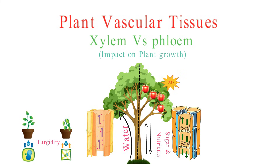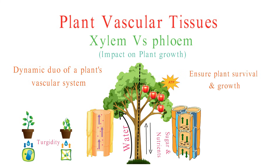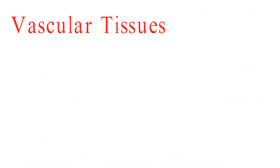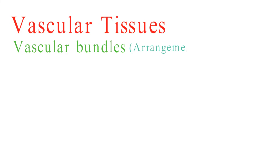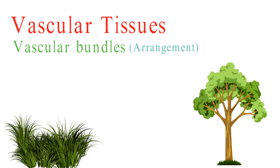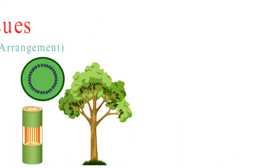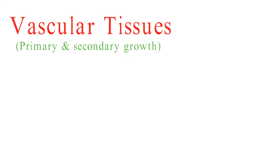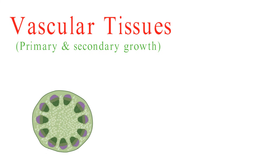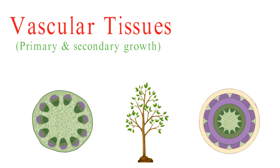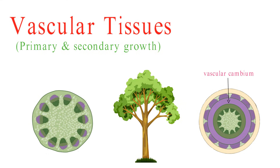In conclusion, phloem and xylem are like the dynamic duo of a plant's vascular system, working together to ensure its survival and growth. While xylem focuses on water and mineral transport, phloem takes care of the plant's food distribution. Plant vascular tissues are organized into vascular bundles, which may vary in arrangement between monocots and dicots. In monocots like grasses, they are scattered throughout the stem, whereas in dicots like trees, they are arranged in a ring. The vascular bundles are crucial for both primary and secondary growth in plants. Primary growth is responsible for the plant's initial growth in length, while secondary growth, mainly driven by the vascular cambium, increases the plant's girth.